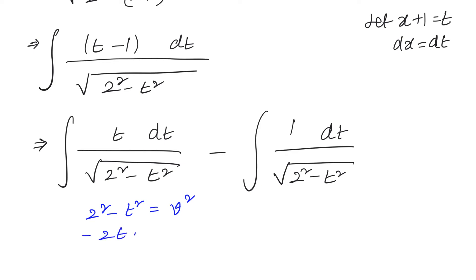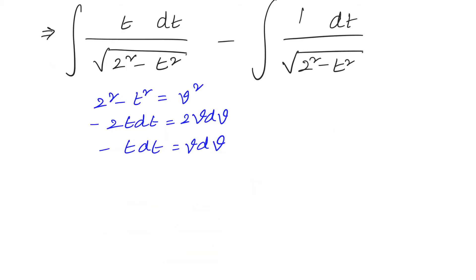Differentiating, we get minus 2t dt equals 2v dv. The 2s cancel, giving t dt equals minus v dv. Now substituting into the first integral, t dt becomes minus v dv divided by square root of 2 squared minus t squared, which is square root of v squared, equals v.